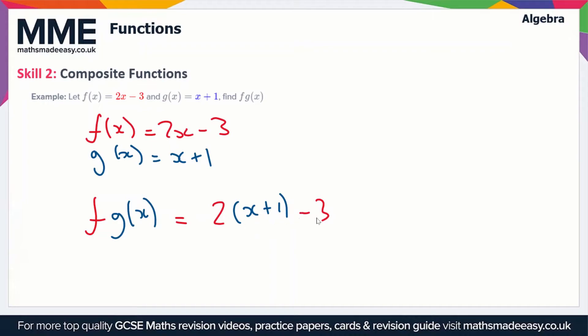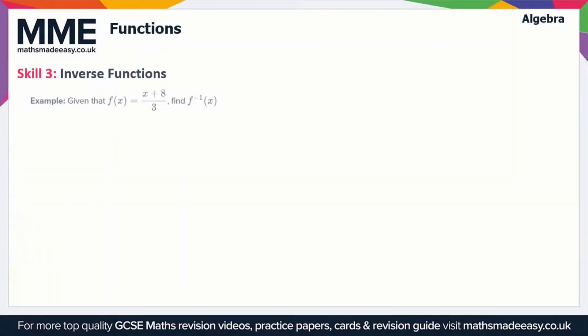And now we just have to expand out these brackets. So 2 times x + 1 gives us 2x + 2, and we've got the minus 3 on the end, so this is going to be 2x - 1. So we can rewrite this as fg(x) is equal to 2x - 1.